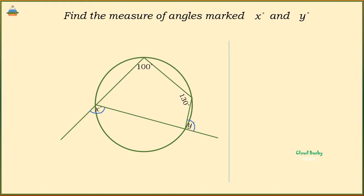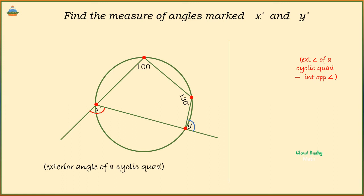Angle X is an exterior angle. It is outside a cyclic quadrilateral. The theorem we are using today states that the exterior angle of a cyclic quadrilateral is equal to the opposite interior angle.